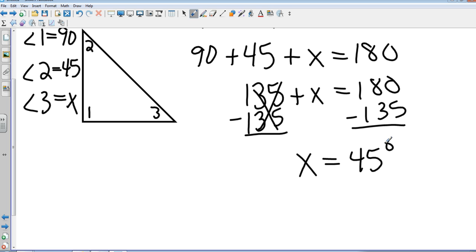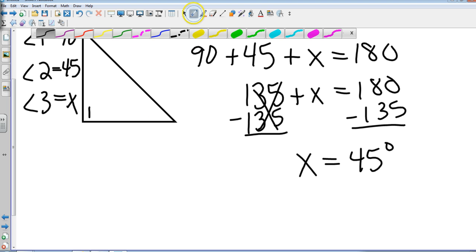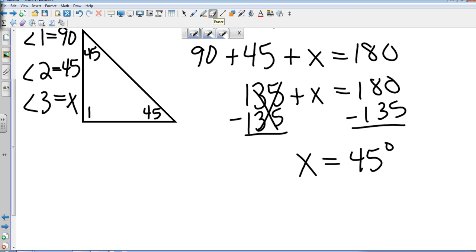I'm going to actually do a little bit of erasing here and I'm going to put my 45s in there. I forgot to erase my angle 1 which is 90. So we could classify this triangle. This is a right triangle and because two of the angles are equal that means two of the sides are equal, so it is a right isosceles.